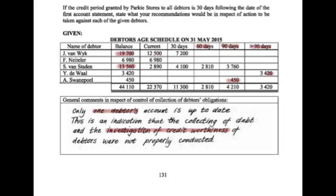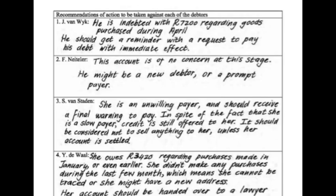Currently he bought an extra $12,500, so out of all our debtors he owes the most — $19,700 in total. His biggest concern is the $7,200 regarding goods purchased already during April. He should get a reminder sent to him with a request to pay immediately, especially the $7,200 that is already overdue for a month.